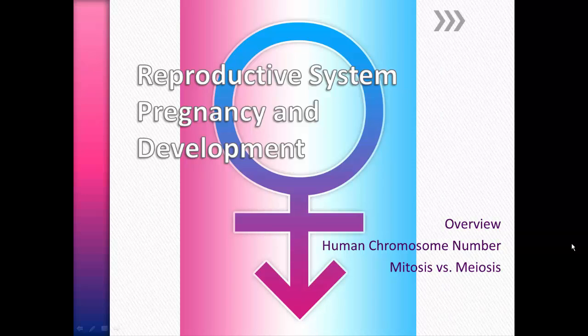In this video lecture, we're going to look at an overview of the reproductive system and the organs that are involved. We'll spend more time looking at human chromosome numbers as well as the process of cell division, which is either mitosis or meiosis.